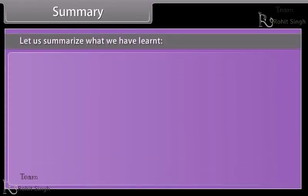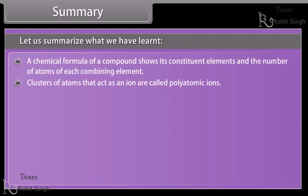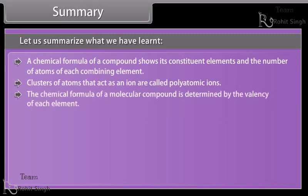Let us summarize what we have learned. A chemical formula of a compound shows its constituent elements and the number of atoms of each combining element. Clusters of atoms that act as an ion are called polyatomic ions. The chemical formula of a molecular compound is determined by the valency of each element.